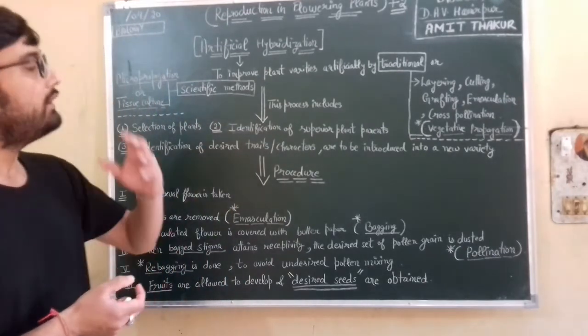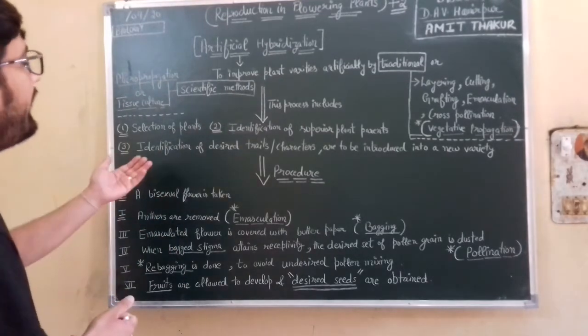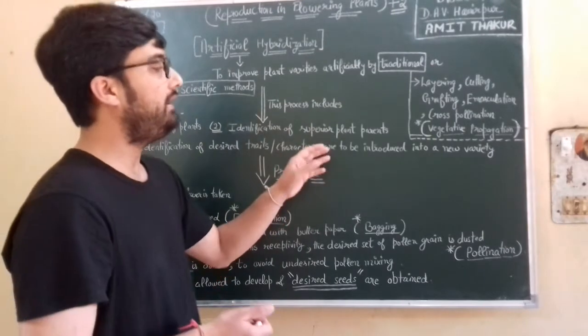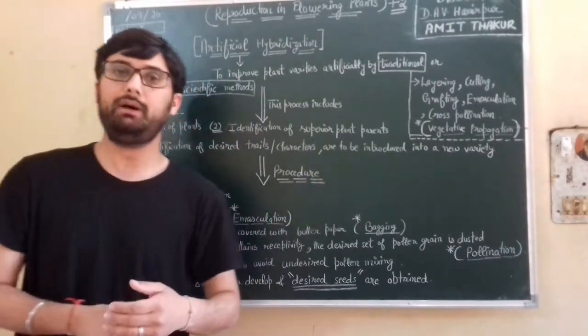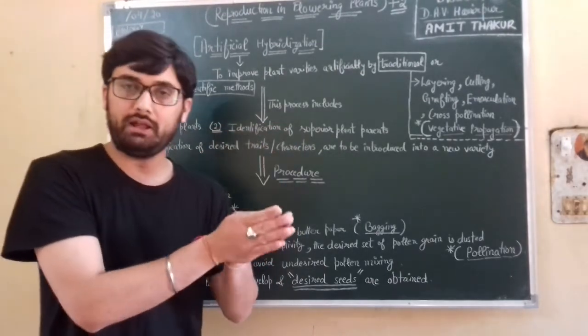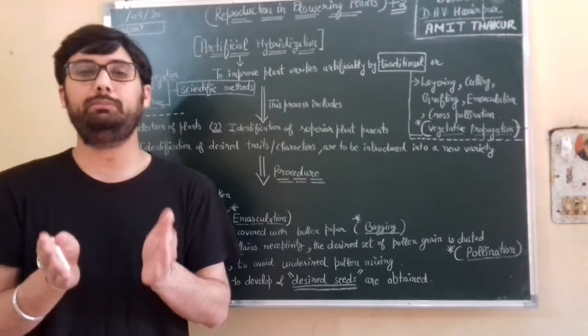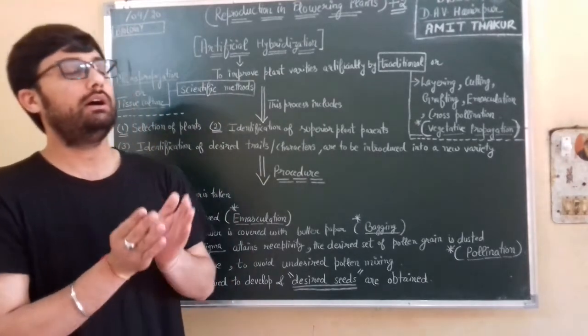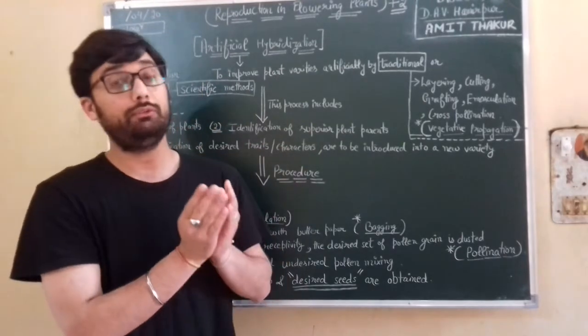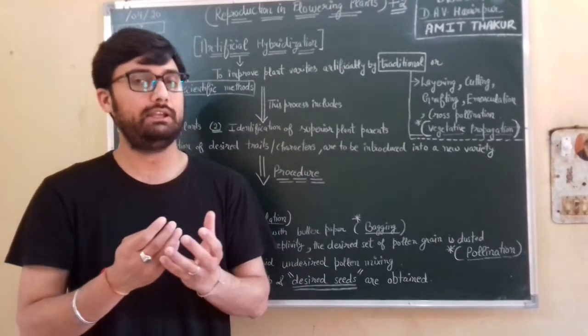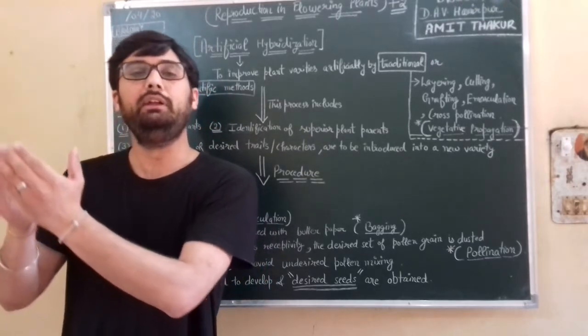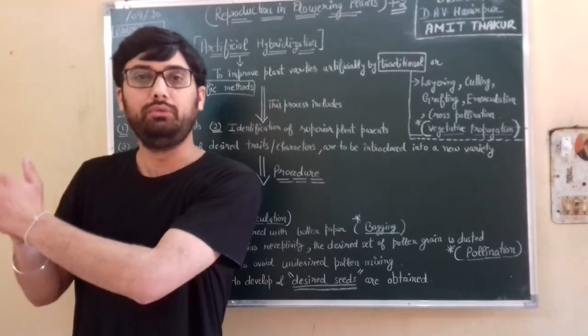And then identification of desired traits or characters which are to be introduced into a new variety. After that, when we get to know that this is a superior parent plant, we get to know which traits and characters are unique, which are quite superior characters. What we want when we create a hybrid plant or variety, then we introduce them.